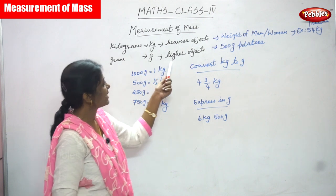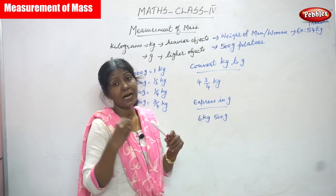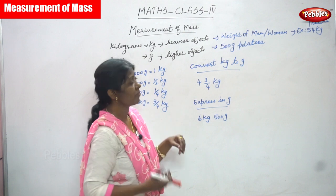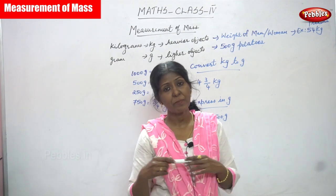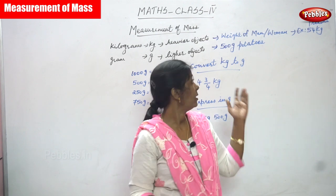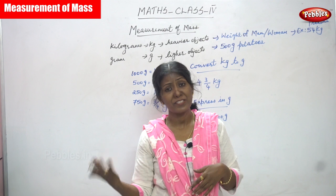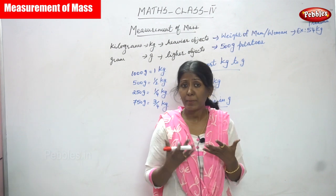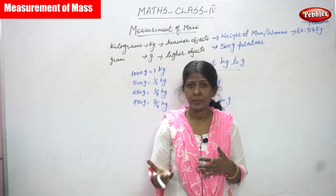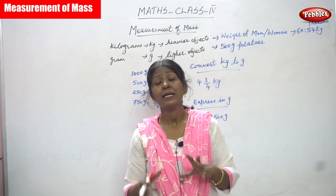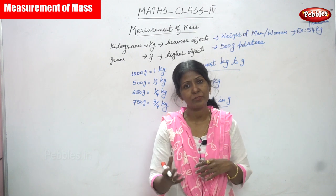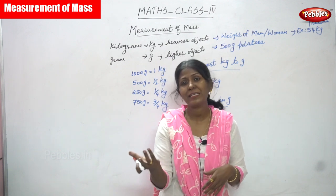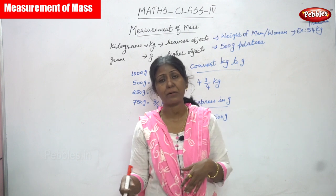Grams are used for lighter objects. For example, half a kg of potatoes, half a kg of tomatoes — 500 grams means half a kg. Also 250 grams of coffee powder, 250 grams of sugar or jaggery. Even 50 grams of coriander powder, 100 grams of chili powder, and 150 grams of turmeric powder — these are all examples of lighter objects measured in grams.